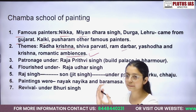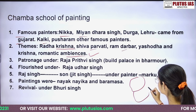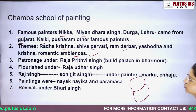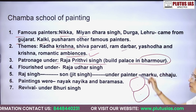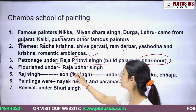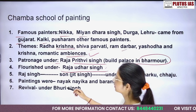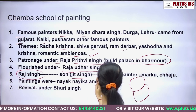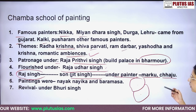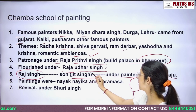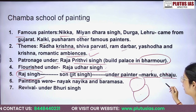The Chamba School of Painting had some influence from Kangra. Its patronage was under Raja Prithvi Singh, who built a palace in Bharmaur. It flourished under Raja Udai Singh and Raja Raj Singh. Under Jit Singh's time, the famous painters were Morku and Chajju. The main paintings of this period were Nayika and Baramasa.